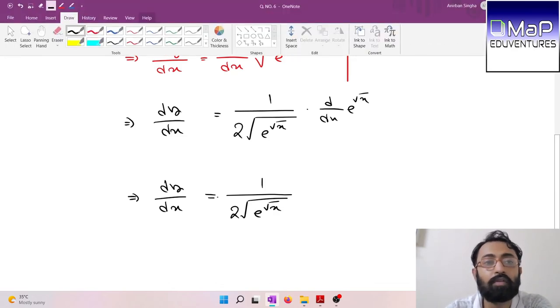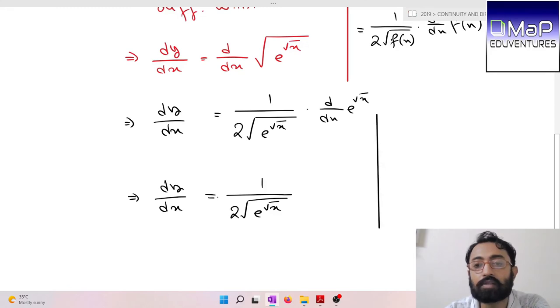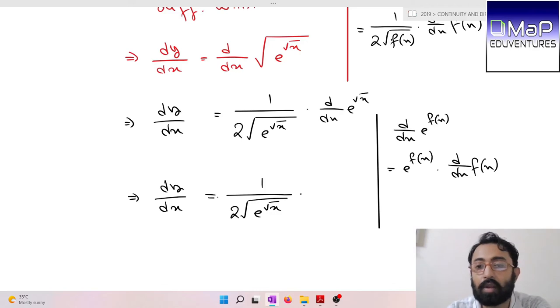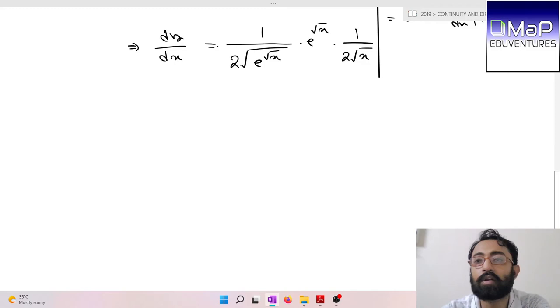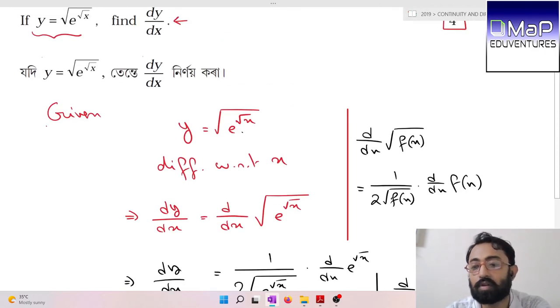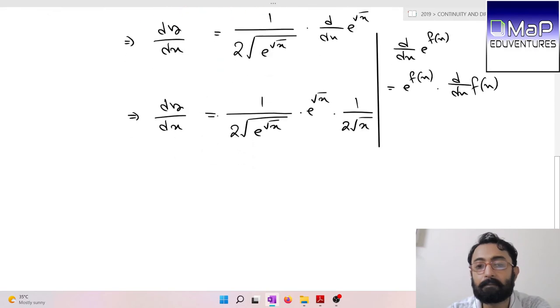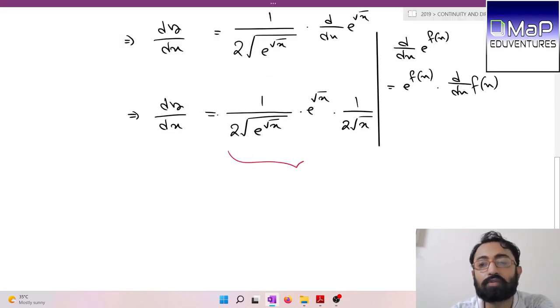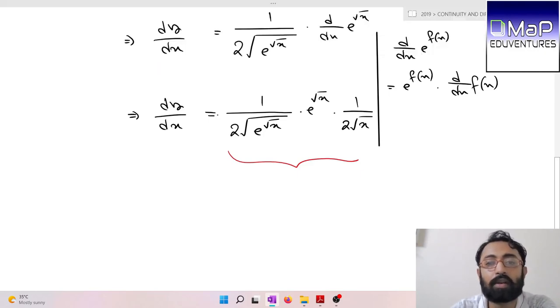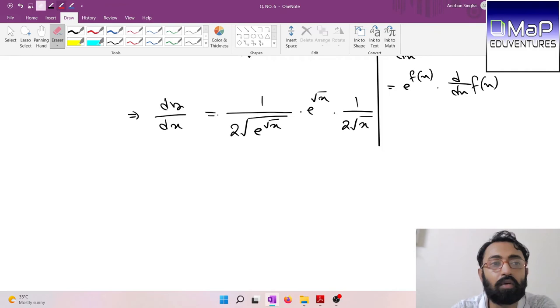Now d/dx of e^√x: this is of the form d/dx of e^f(x). The formula is e^f(x) times d/dx of f(x). So it will be e^√x times d/dx of √x, which is 1/(2√x).